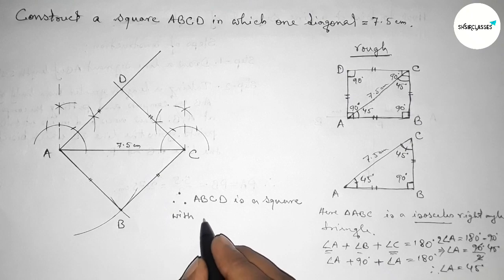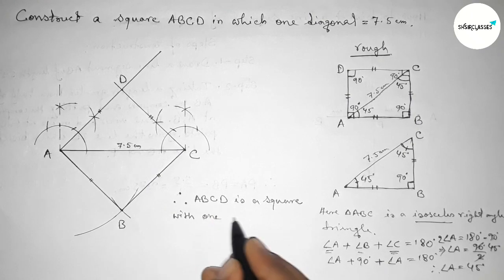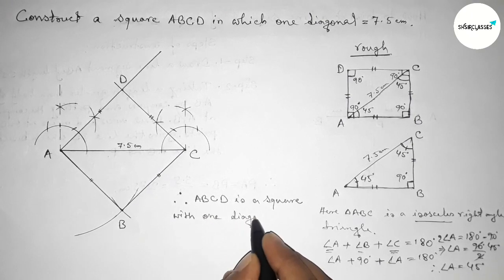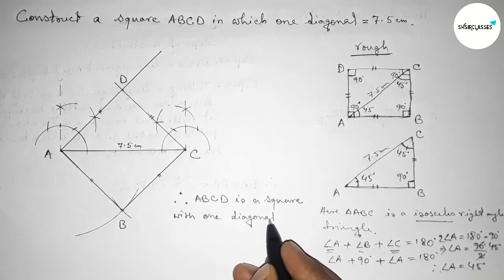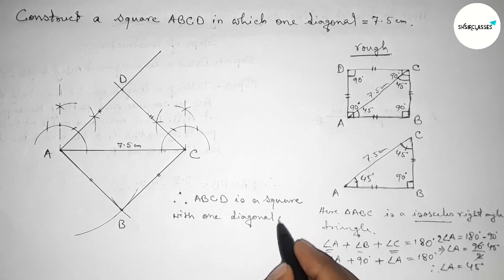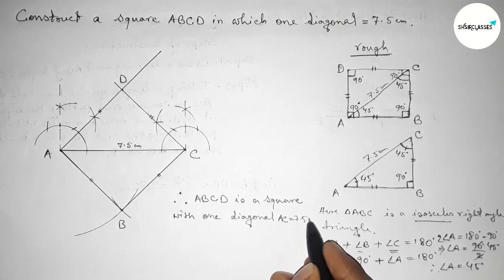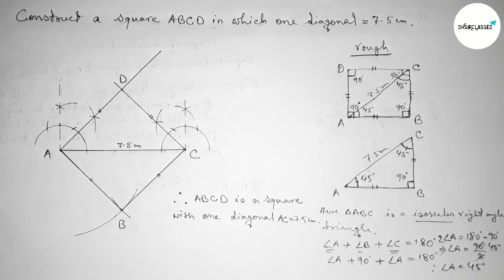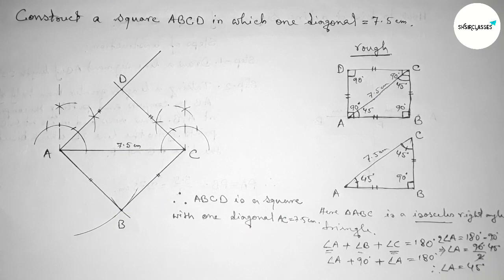So ABCD is a square with one diagonal AC equals 7.5 centimeters. That's all — thanks for watching. If this video is helpful to you, please share it with your friends.